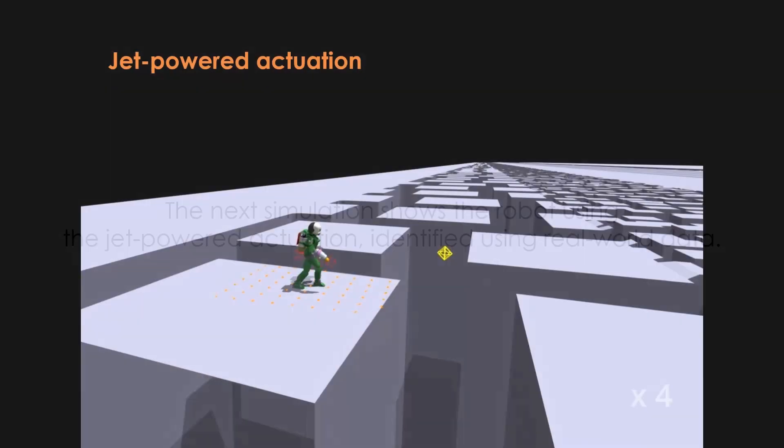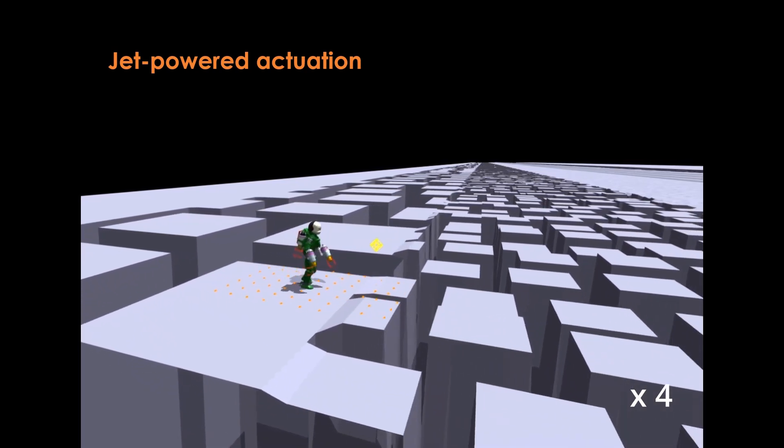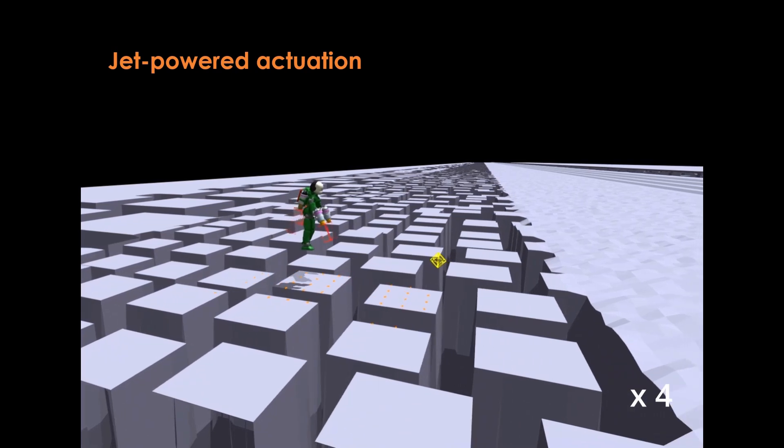Lastly, this scenario shows the use case of jet-powered actuation. The policy learns how to exploit this actuation and transition between walking and flying based on environmental feedback.